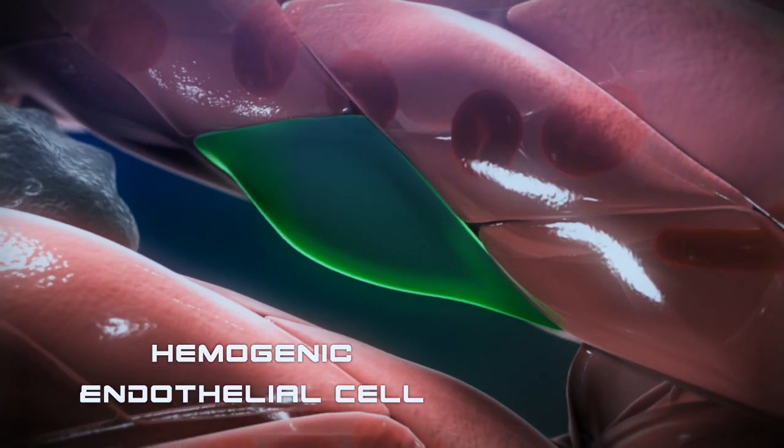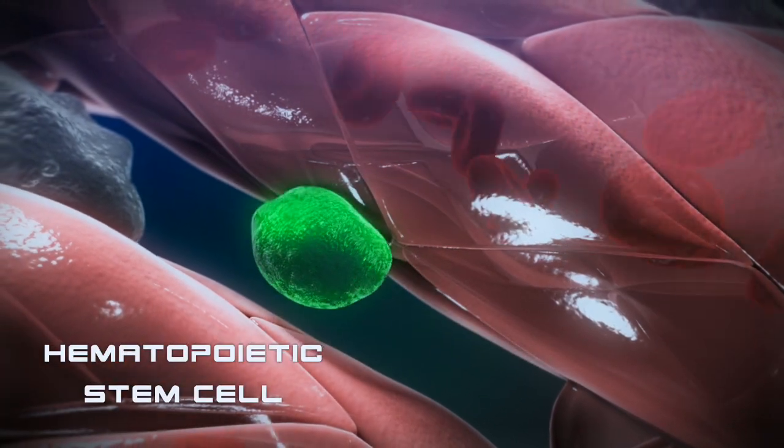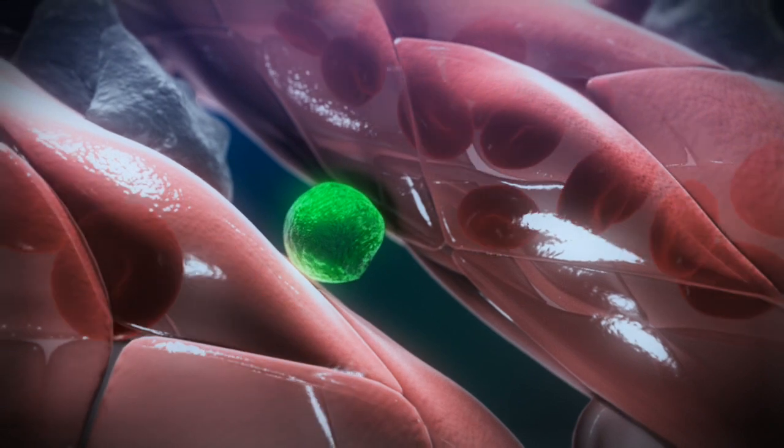This endothelial cell changes its fate and becomes a blood stem cell. It rounds up, and at that point it could be transplanted and rescue a lethally irradiated animal.